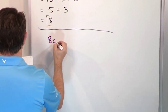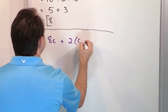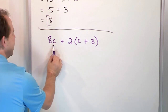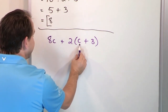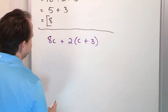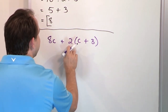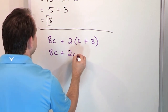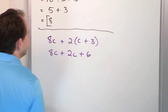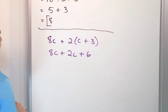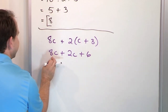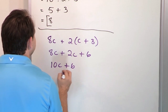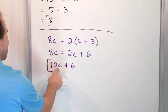What if we have 8 times C plus 2 times the quantity C plus 3? C is some variable. Inside the parentheses, I'd love to simplify first, but they're unlike terms — I can't add them. So the only thing I can do is distribute the 2 into everything. So I have 8C plus 2 times C which is 2C, plus 2 times 3 which is 6. Now I'm adding, going left to right: 8C plus 2C is 10C, because they're like terms.